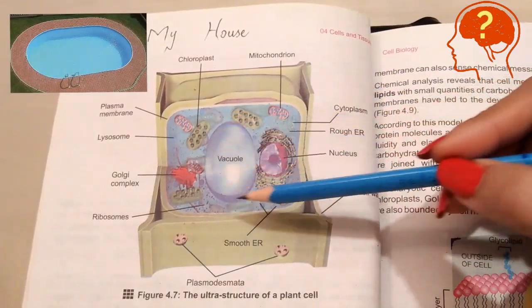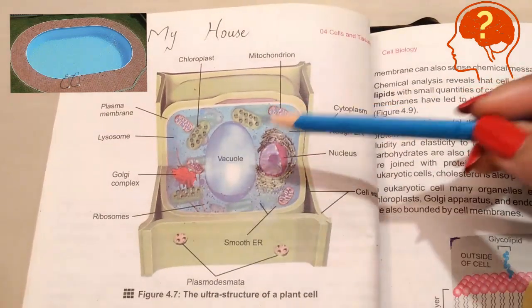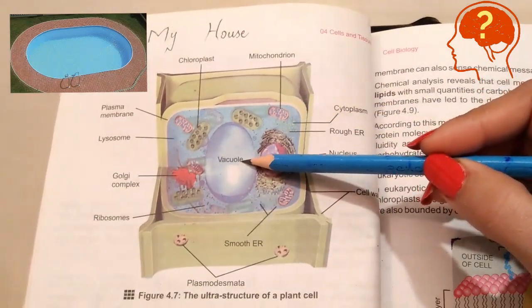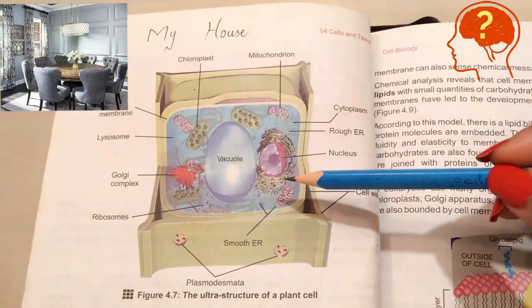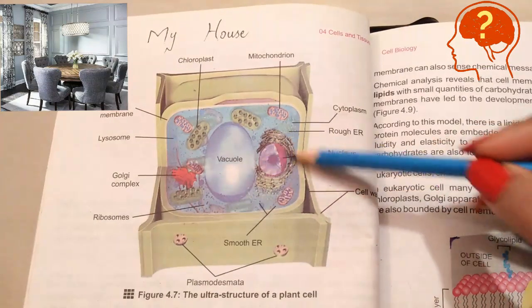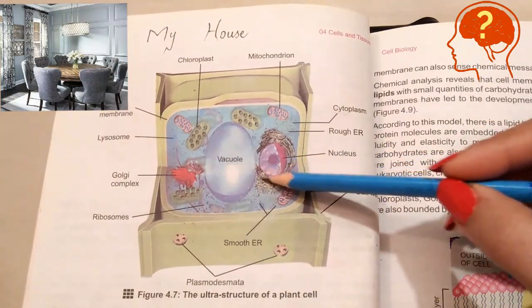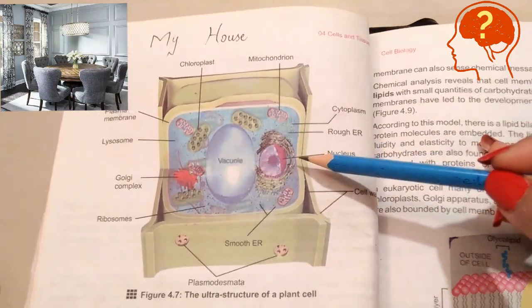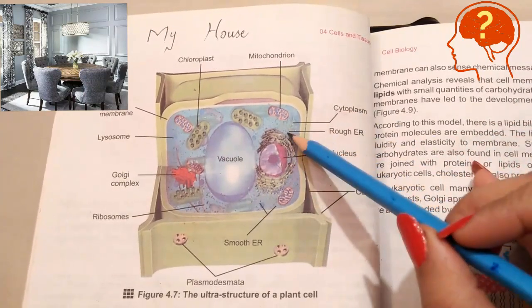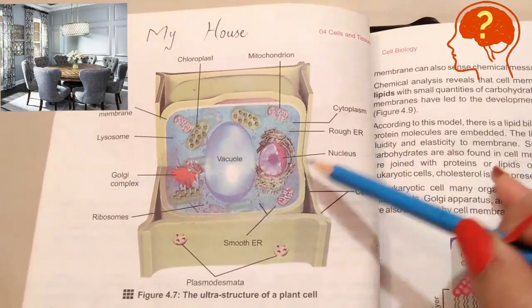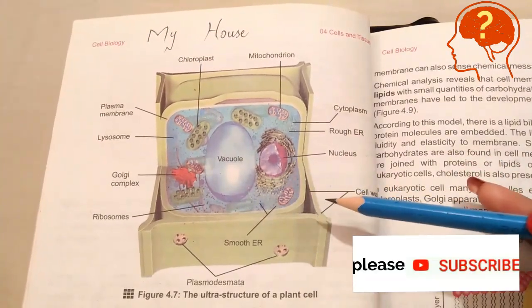Then you have a big oval-shaped swimming pool in the center of the house — compare this pool with the vacuole, because 'pool' and 'vacuole' sound similar. Then there is a round dining hall — compare this dining hall with the nucleus. This hall is covered by curtains having dotted patterns on them — compare these curtains with the rough endoplasmic reticulum, and the dots on them with the ribosomes.